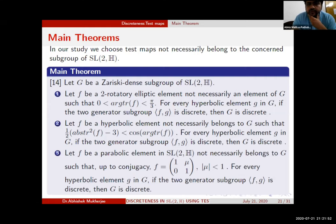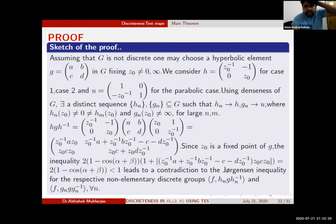The third statement is for the parabolic element. If you consider f to be a parabolic element in SL(2,H) not necessarily in the group G, and suppose you take the parabolic element as (1, μ; 0, 1) where |μ| < 1 up to conjugacy, for every hyperbolic element g in capital G, if the two-generator subgroup is discrete then G is discrete. These are the results we have obtained.